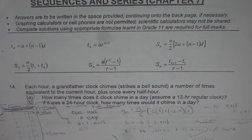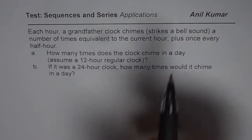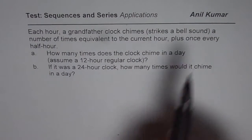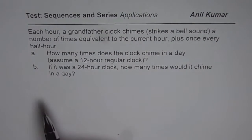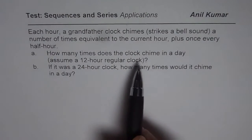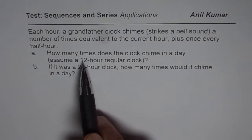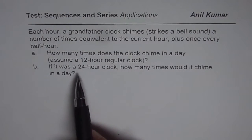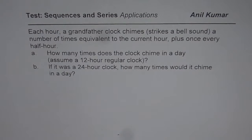I am Anil Kumar and here is the solution to the application question on sequences and series. The question is: each hour a grandfather clock strikes a bell a number of times equivalent to the current hour, plus once every half hour. How many times does the clock chime in a day, assuming a 12-hour regular clock? Part B: if it was a 24-hour clock, how many times would it chime in a day? So there are two parts to this question.